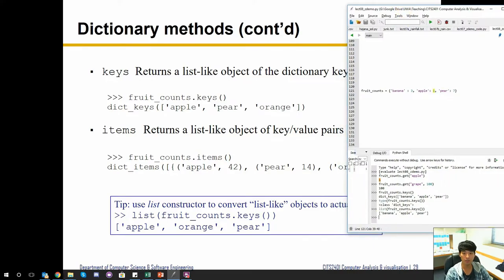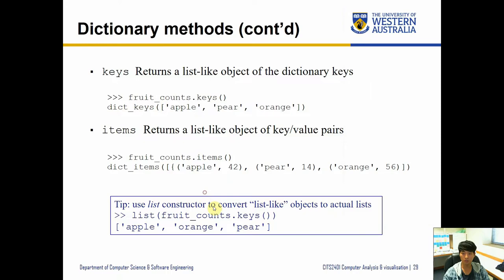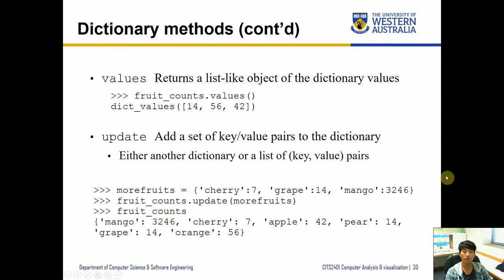The `items()` method gives us both the key and value pairs together. Calling `fruit_counts.items()` returns a 'dict_items' object — again, not a list but a list-like type. You can see square brackets in the output. To get a proper list, pass it into the `list()` constructor, and you'll see that the key-value pairs are saved as tuples inside a list.